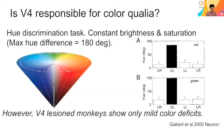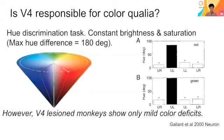However, V4 lesion monkeys showed a much milder color deficit. So most likely patient AR was impaired in V4 but also in an area called V8. V4 itself may not be solely responsible for this color deficit.